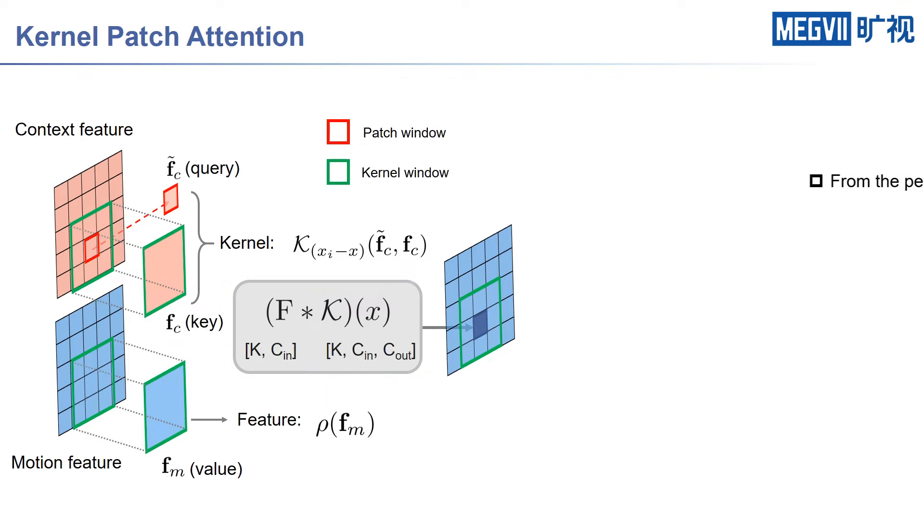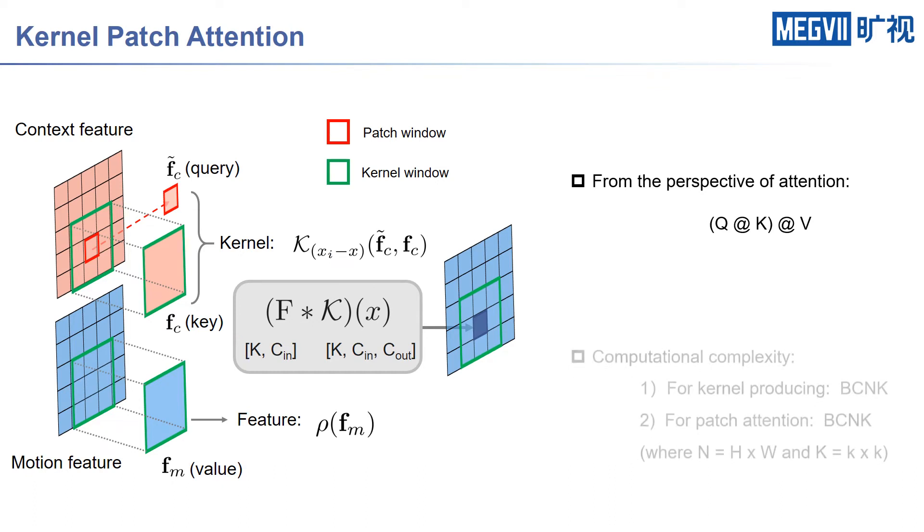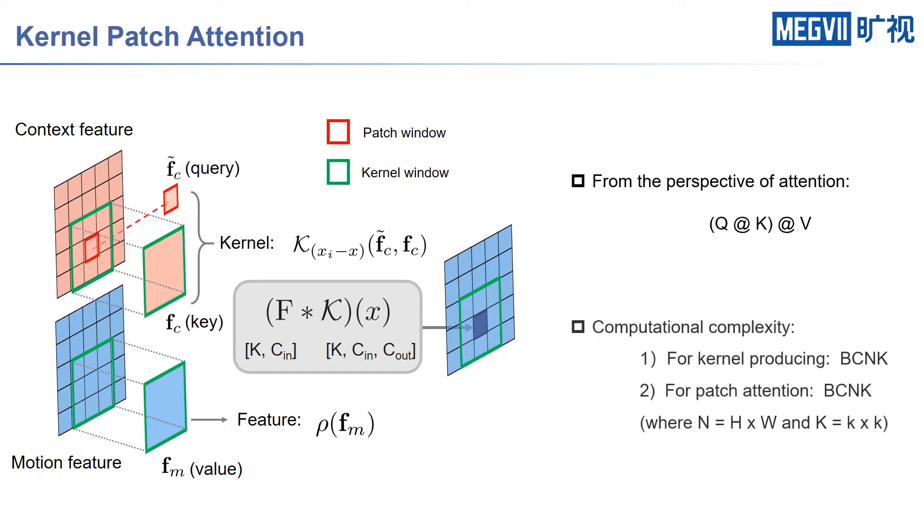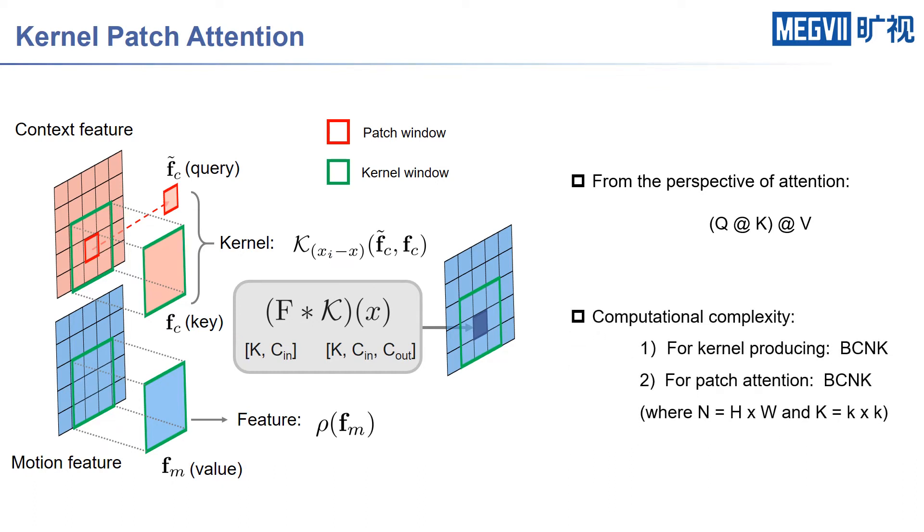From the perspective of attention, the query and key vectors are produced from the context features in the center patch window and the kernel window, respectively. The value vector is from the motion feature in the corresponding kernel window. The computational complexity of the two steps are both O(NK), where N denotes the spatial dimension and K indicates the kernel size.